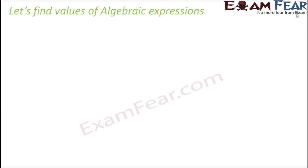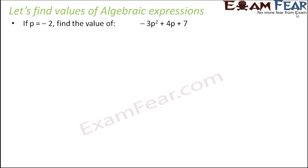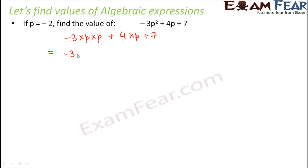So let us try to find values of some algebraic expressions. Let's say that if p is equal to minus 2, find the value of minus 3p squared plus 4p plus 7. So minus 3p squared actually means minus 3 into p into p, plus 4 into p, plus 7. Now the value of p is given as minus 2, so let us replace p with minus 2.